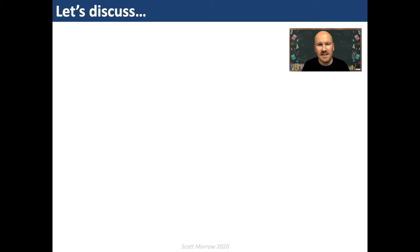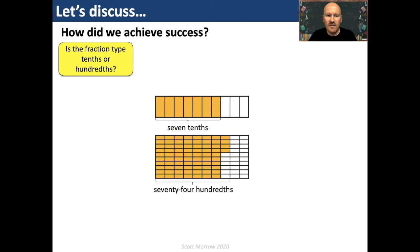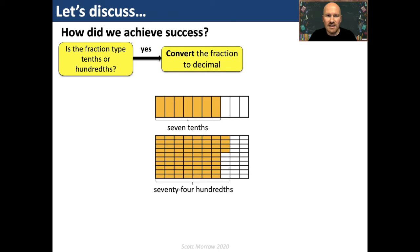It's time to discuss our success criteria. What are the steps to convert a fraction into a decimal fraction? When converting, the first thing to ask is: is the fraction type tenths or hundredths? For example, seven tenths or seventy-four hundredths — the answer is yes. In that case, we can simply convert: seven tenths is written as 0.7, and seventy-four hundredths is written as 0.74.